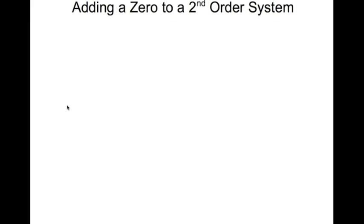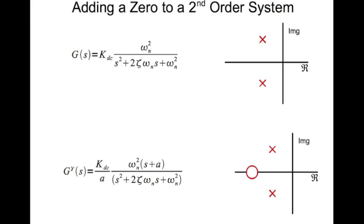Now let's look at adding a zero to a second order system. That's our original system. We add a zero at a. That's a zero at a. And I've divided K_DC by a to maintain the same DC gain. If you look at the DC gain of this and this, both are equal to K_DC.